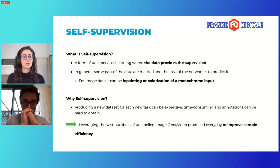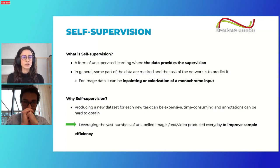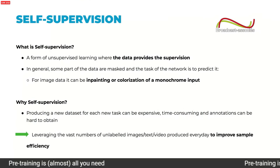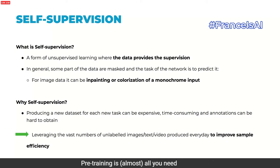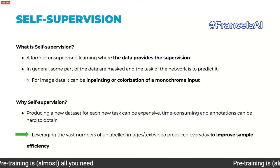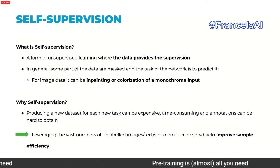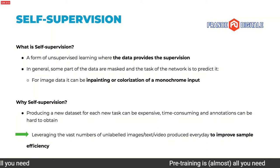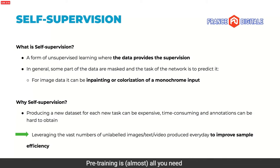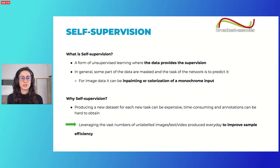What is self-supervision? It's a form of unsupervised learning where the data provides the supervision. In general, some parts of the data are masked, and the task of the network is to predict it. For example, for image data, it can be inpainting or colorization of a monochrome input. Because producing a new dataset for each new task can be expensive, time-consuming, and annotations can be hard to obtain, there is a real opportunity in leveraging the vast numbers of unlabeled data produced every day to improve sample efficiency. The goal of this talk is to mitigate the saying that we need a lot of annotations to train deep neural networks.